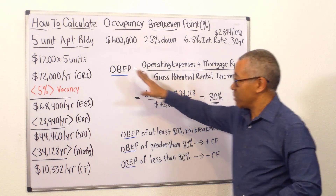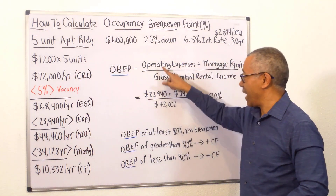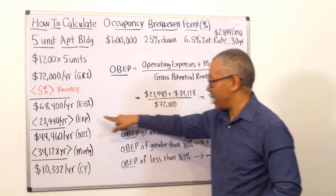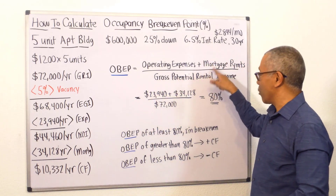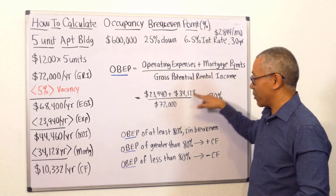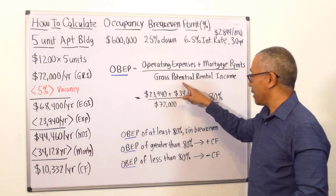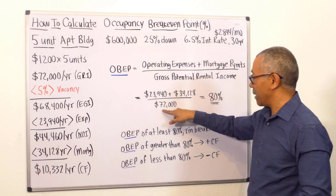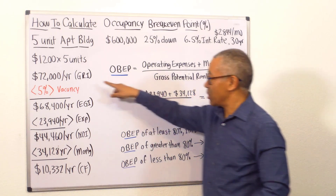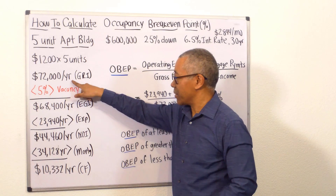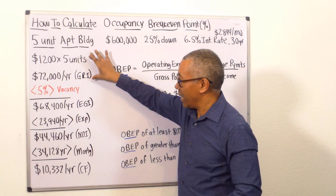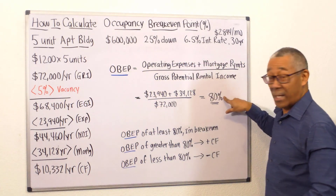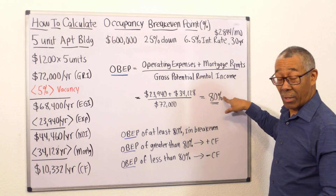I'm going to use my example over here. I have operating expenses of $23,940 plus annual mortgage payments of $34,128, divided by my gross potential rental income of $72,000 — that's my gross rental income as if I'm 100% full. That equals 80%.